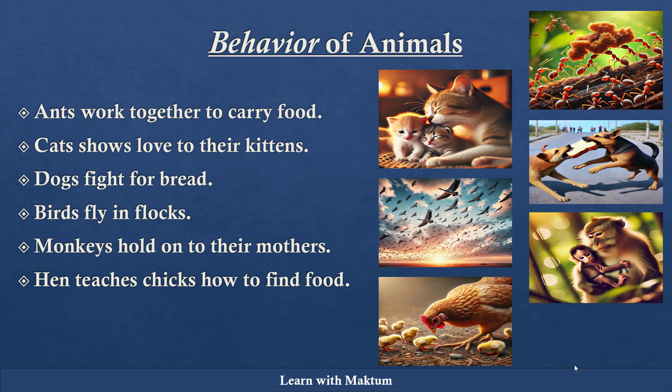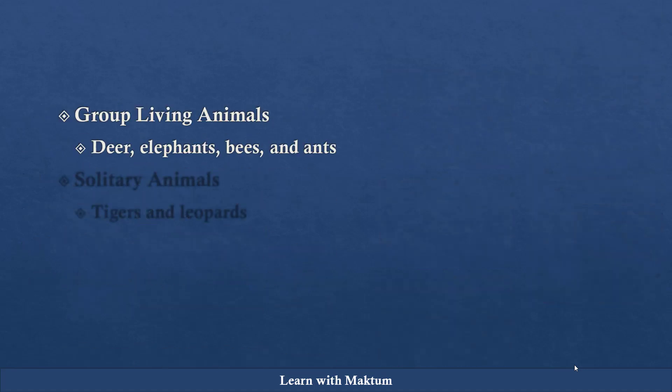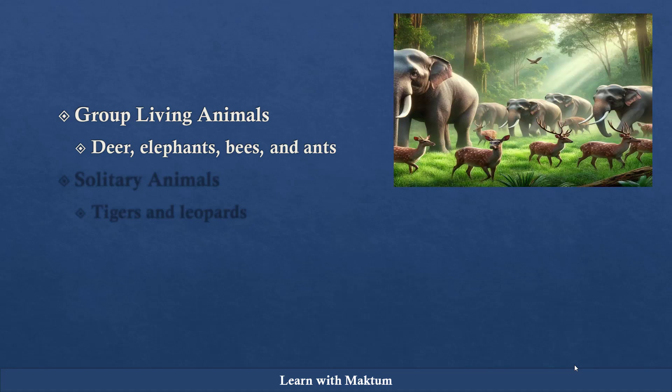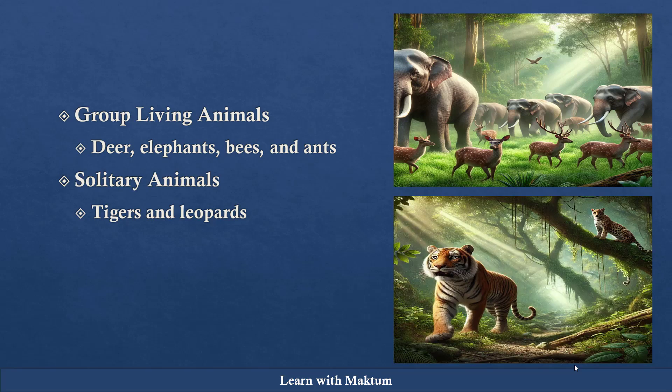Some animals like to live in groups and few of them prefer to stay alone. Based on that, we can say there are group living animals like deer, elephants, bees, and ants. And there are animals called solitary animals which want to stay alone, like tigers and leopards.